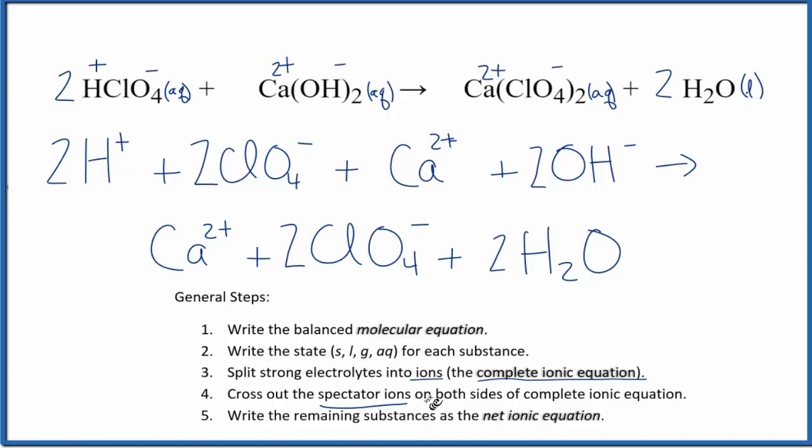So now we can cross out spectator ions. They appear on both sides. So look at 2H+, that doesn't appear over here. 2ClO4 minus, yeah it's right here, and it's right here.